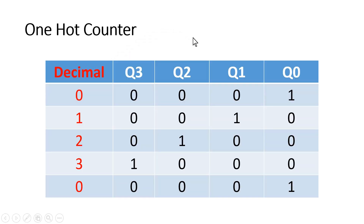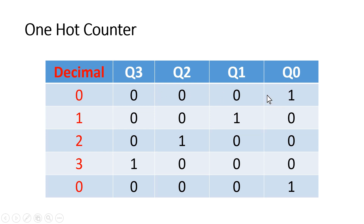Let me explain you the answer. In this example I have taken a four-bit one-hot counter. As the name indicates, its output will be one-hot encoded. One-hot encoded means out of these four bits, one bit will be high at a given point of time.